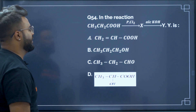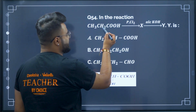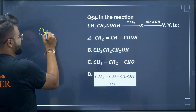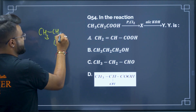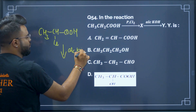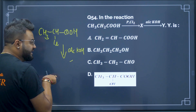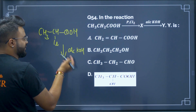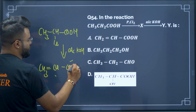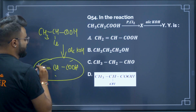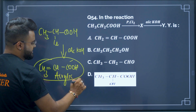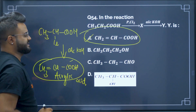Question number 54: when CH3CH2COOH reacts with phosphorus in the presence of chloride, it forms CH3CHClCOOH. When this is reacted with alcoholic KOH, it undergoes elimination to form an alkene — CH3CH=CHCOOH — that is nothing but acrylic acid. Therefore option A will be your correct answer.